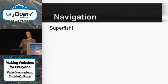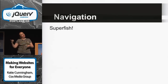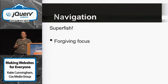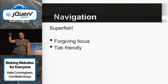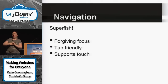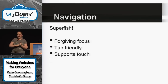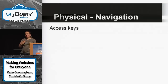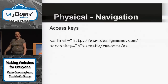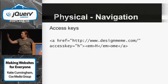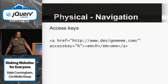I highly recommend Superfish — you might know it as Suckerfish or Son of Suckerfish. It gives you a very forgiving focus and does drop-downs: if you mouse over something, you get a drop-down; if you move away for just a second, it stays down and then rolls back up. It's very tab-friendly — you can tab through complex menus. It supports touch and is based on jQuery 1.9, constantly updated. Access keys are really easy to add: you set something as an access key with 'accesskey=whatever,' and when they hit a combination of keys with that letter, it'll activate that element.